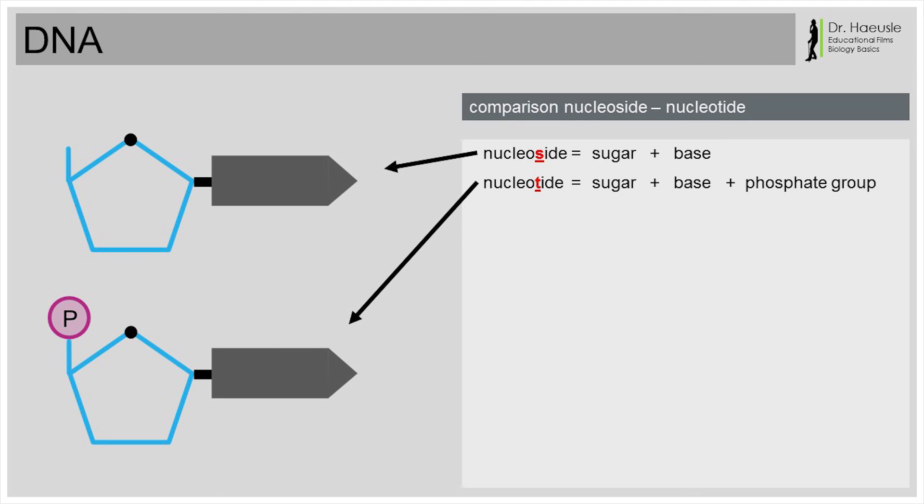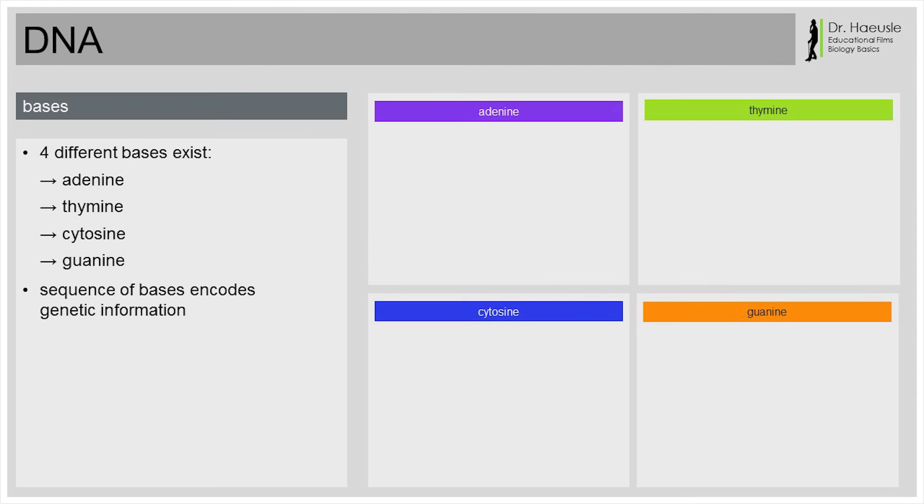In the DNA, there are only four different nucleotides. Sugar and phosphate of each building block are identical, so the difference lies only in the base. The DNA contains four different types of bases, adenine and thymine, cytosine and guanine. The sequence of these bases encodes the information that is stored in the DNA, the genetic information.